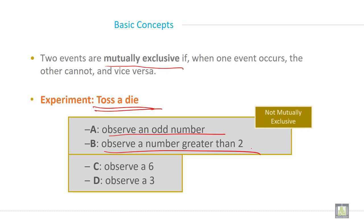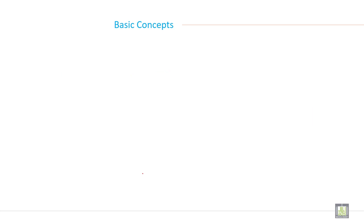This is not mutually exclusive. Then C: observe a 6 and observe a 3. It is a mutually exclusive event. B and C, B and D is a mutually exclusive event.